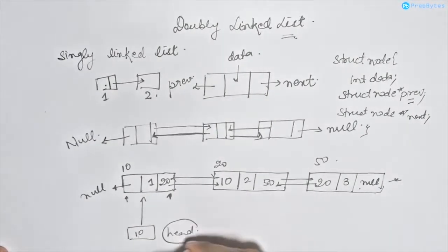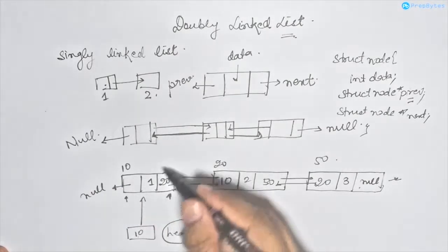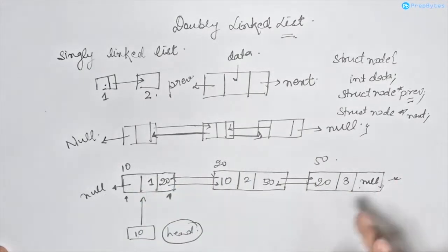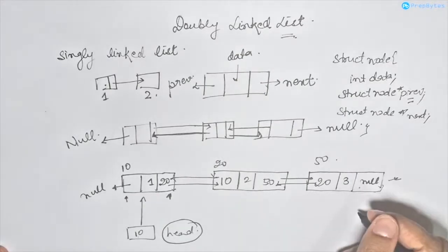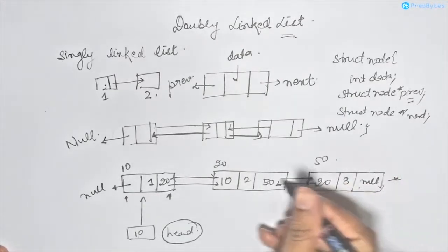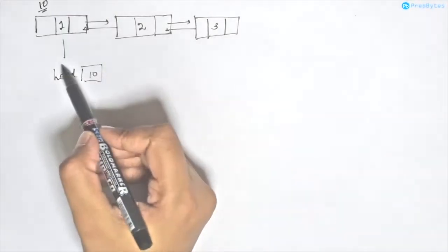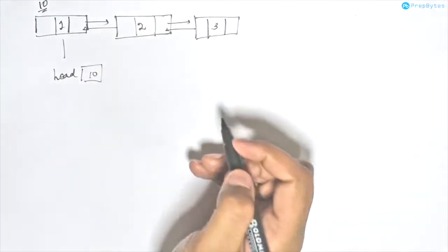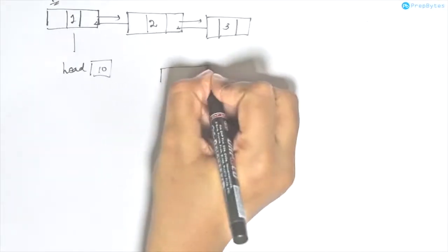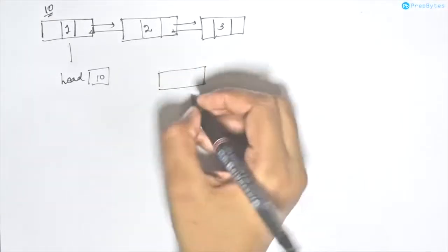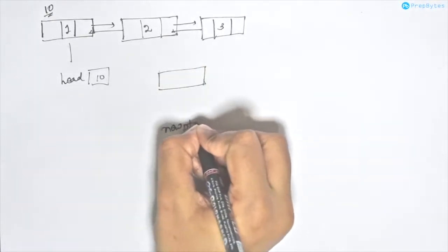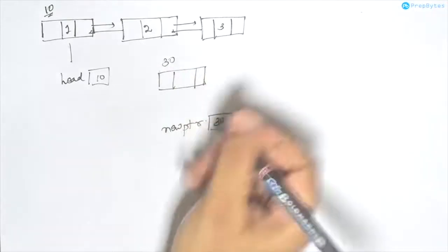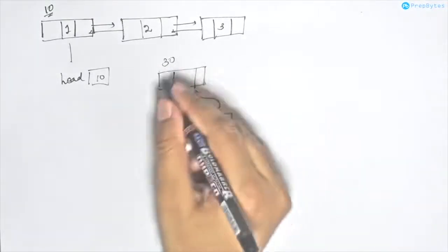In a doubly linked list also, we have the head pointer which stores the address of the first element of the linked list. In case we have to go to the end, we can simply traverse using the next pointer. Now let's say I have to insert a new node at the front of a doubly linked list. Let's say I have created a new node, we have a new pointer which is created at address 30, and this new pointer holds the address of this newly created node.